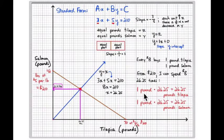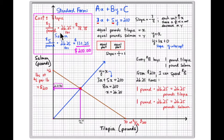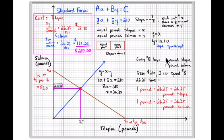I can go in 26 and a quarter times, spending eight dollars each time, using up my $210. That means I buy one pound of tilapia 26 and a quarter times — that's 26 and a quarter pounds — and one pound of salmon 26 and a quarter times — that's 26 and a quarter pounds of salmon. The cost: three dollars times 26¼ is $78.75, plus five dollars times 26¼ is $131.25, totaling $210. Keeping this picture in mind helps understand the rest of these problems.